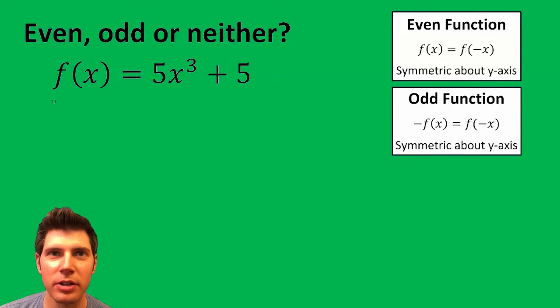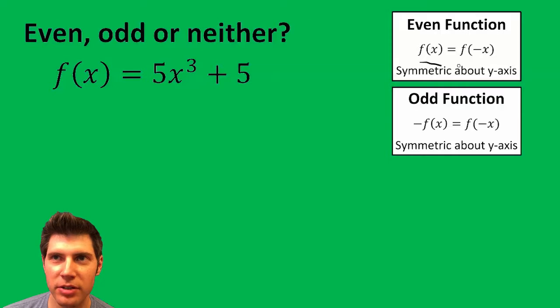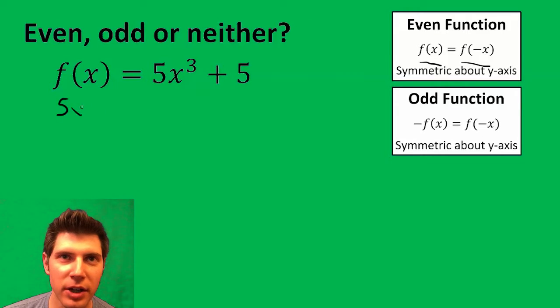First, let's test to see if it's even. It should be f(x) equals f(-x). f(x) is 5x³ + 5, and f(-x) is 5(-x)³ + 5.